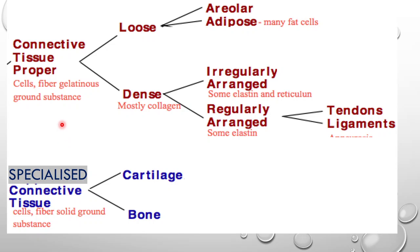Depending upon the matrix, connective tissue can be divided broadly into three types: loose connective tissue, dense connective tissue, and specialized connective tissue. Loose connective tissue includes those types where the matrix is very loosely present — almost like a semi-fluid ground substance. Its types are areolar tissue and adipose tissue.